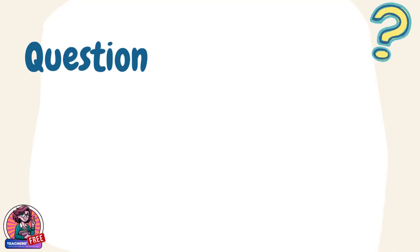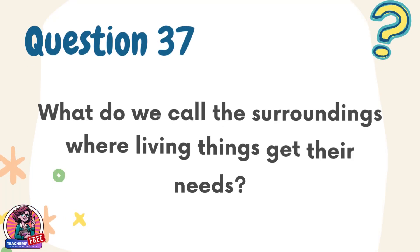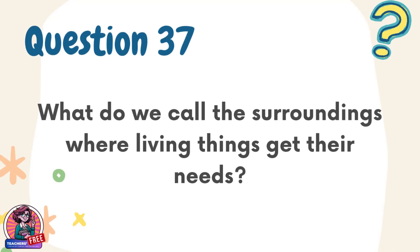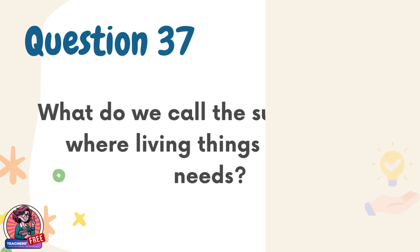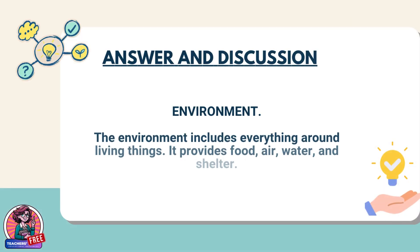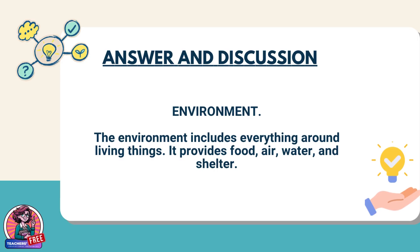Question 37. What do we call the surroundings where living things get their needs? Answer: Environment. The environment includes everything around living things. It provides food, air, water, and shelter.